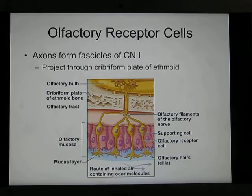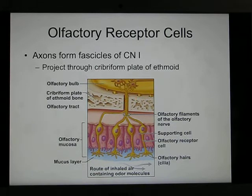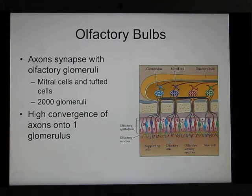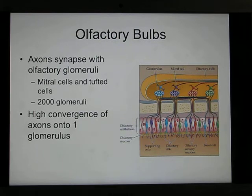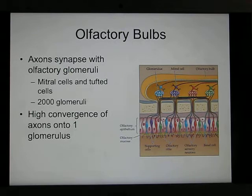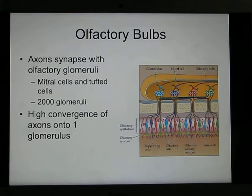The signal goes through cranial nerve number one. We don't know too much about the olfactory and gustatory systems because not many scientists have studied them. In 2004, a Nobel Prize winner studied the olfactory system, and this is how we came to know this system better from the early 21st century.